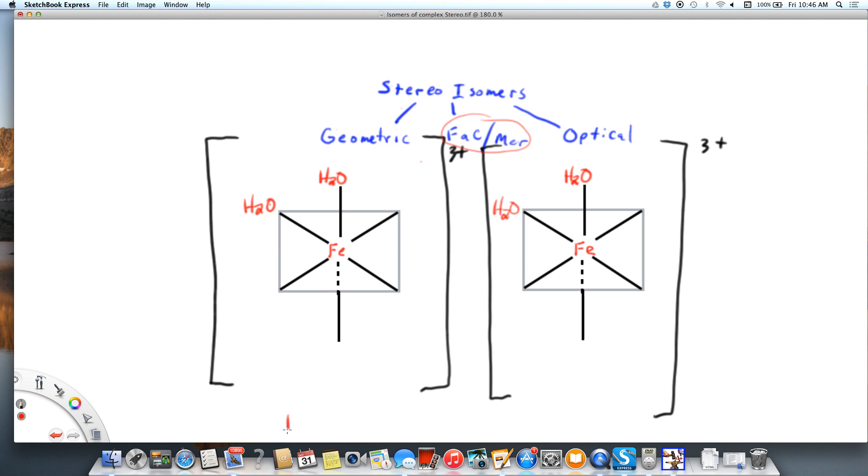On the left, I'm going to draw the FAC or face isomer, and on the right, it's going to be the mer or meridian isomer. I want to show you that I could draw the water molecule in different places and have the same result. I could put the water molecule over here, and I would have that face back in the back would be my face. The other place I could draw the water molecule would be here, and that's where I'll leave it.